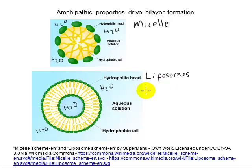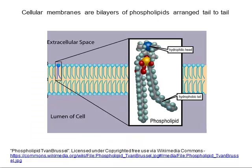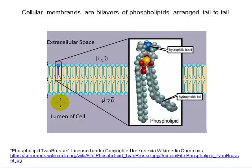This bilayer structure that forms spontaneously in liposomes is fundamentally exactly the same structure that makes up all cellular membranes. Just like in the liposome, the hydrophobic tails are directed toward the interior of the bilayer, and the hydrophilic head groups are interacting with water both inside and outside the cell. This bilayer forms a very effective barrier against the uncontrolled passage of materials across the cellular membrane, which is critically important for a cell to be able to keep the good stuff in and the bad stuff out.